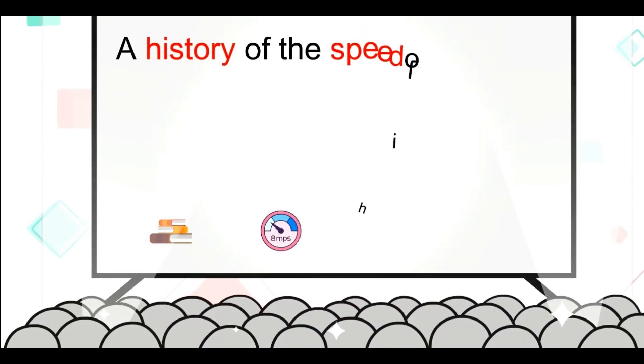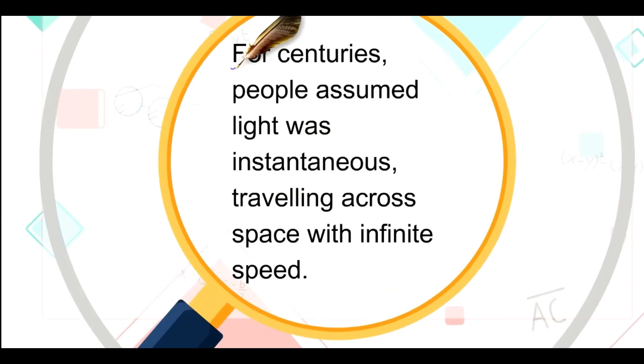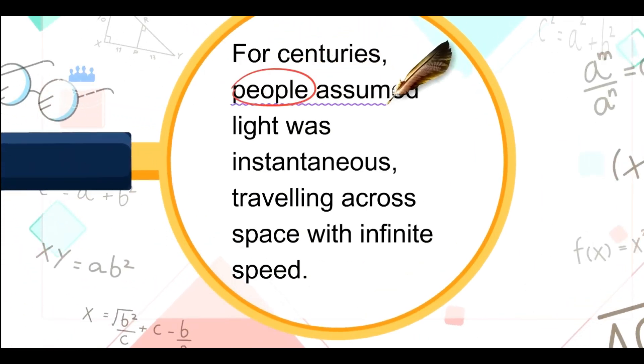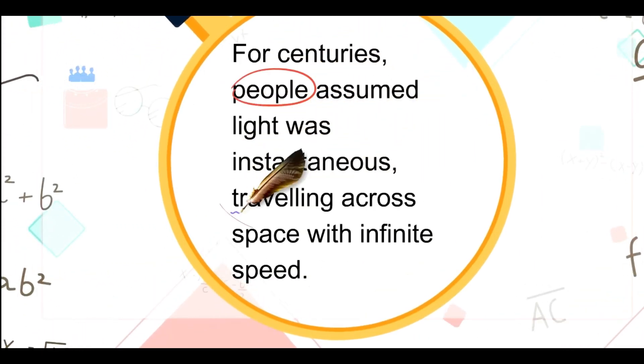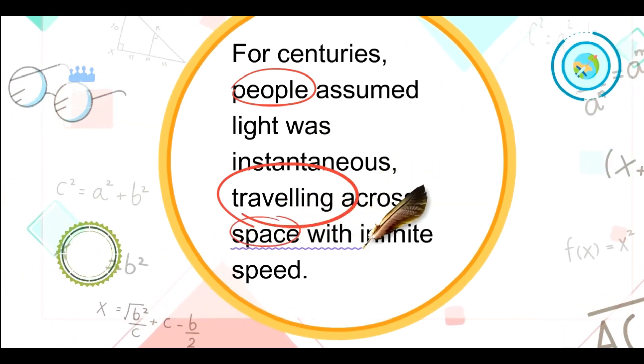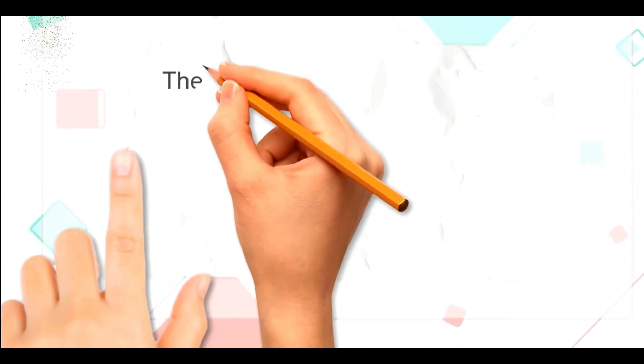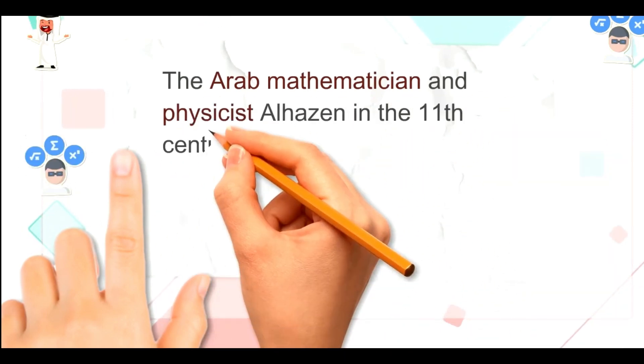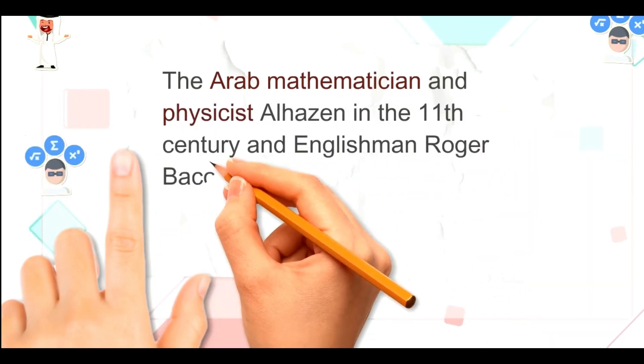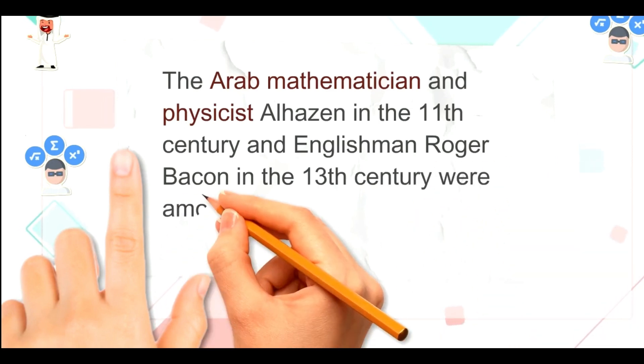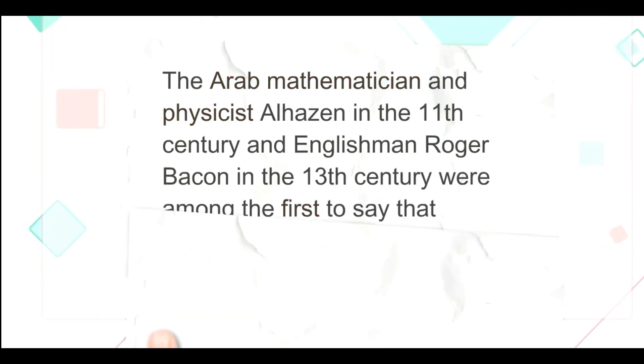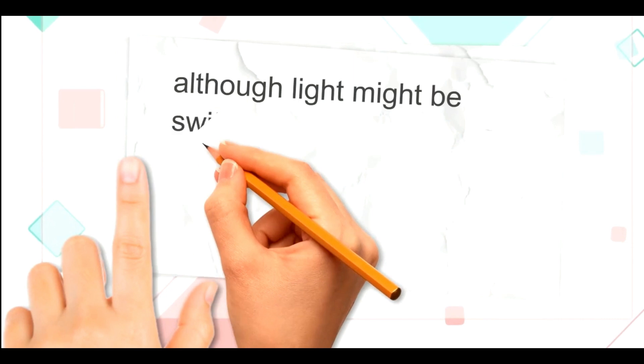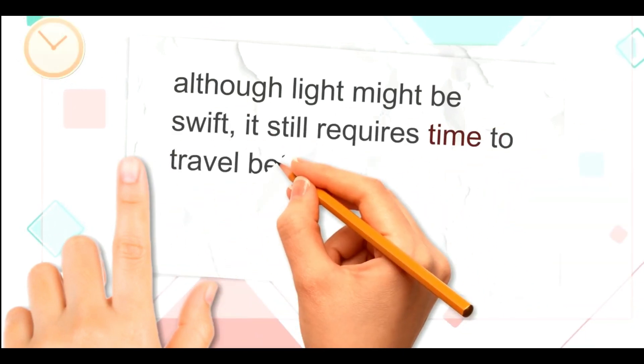A History of the Speed of Light. For centuries, people assumed light was instantaneous, traveling across space with infinite speed. The Arab mathematician and physicist Al-Hazan in the 11th century and Englishman Roger Bacon in the 13th century were among the first to say that although light might be swift, it still requires time to travel between A and B.